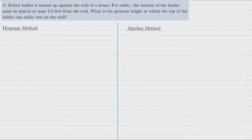In the next example, we have a 10-foot ladder leaned up against the wall of a house. For safety reasons, the bottom of the ladder must be placed at least 2.5 feet from the wall, and we're asked to find the greatest height at which the top of the ladder can safely rest on the wall. Again, the key is to start with a diagram. The wall is perpendicular to the ground, giving us a 90 degree angle.